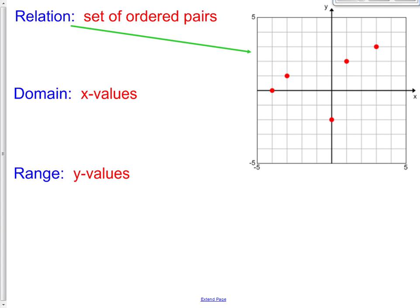A relation is just a set of ordered pairs. You know how to define ordered pairs — the x-axis comes first, so this would be 3 to the right. The y-axis comes second, so we call that point (3, 3). This point right here would be (1, 2). A relation is just a set of ordered pairs.